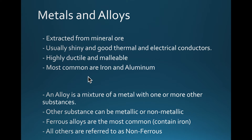The most common metals are iron and aluminum. We also create alloys, which are mixtures of metals — we want to create a mixture that's even better than the original components, essentially a super substance. The mixtures can be made of metals and non-metals. The most common ones are ferrous alloys — ferrous comes from 'fer,' which is iron — so these alloys are composed of iron and other materials. The others are called non-ferrous, meaning they do not contain iron.